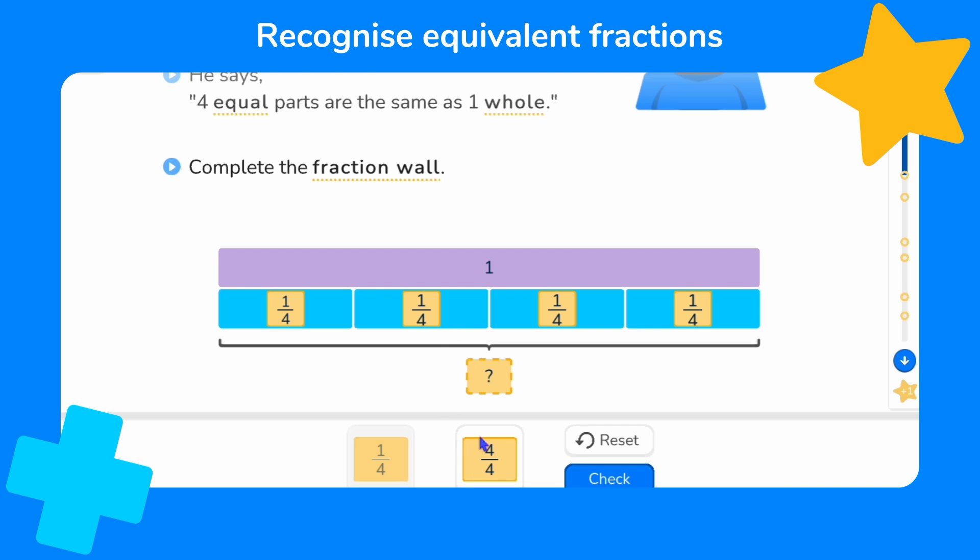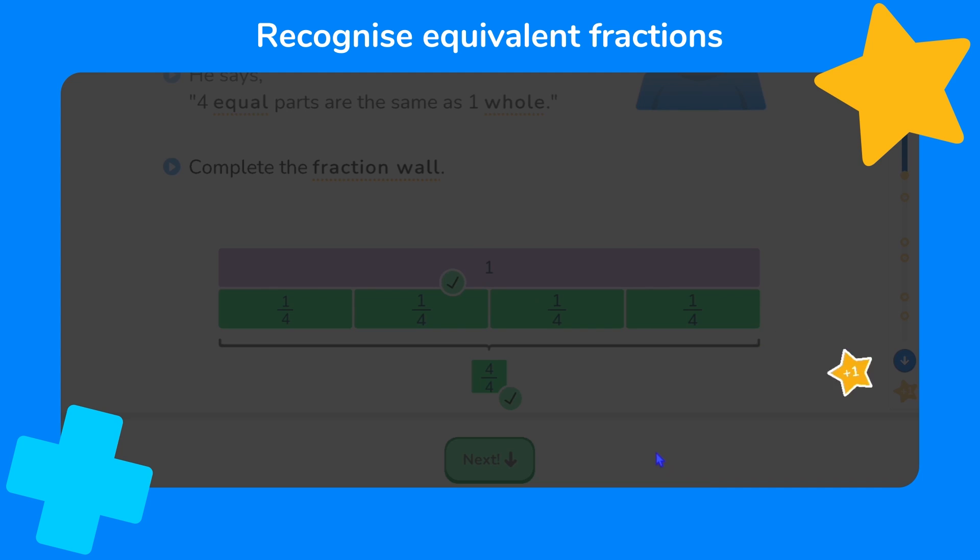The other label has a four over a four. Four out of four. Or four quarters. Well four labels the whole amount. Do you agree? Let's see if we're right. Yes we are.